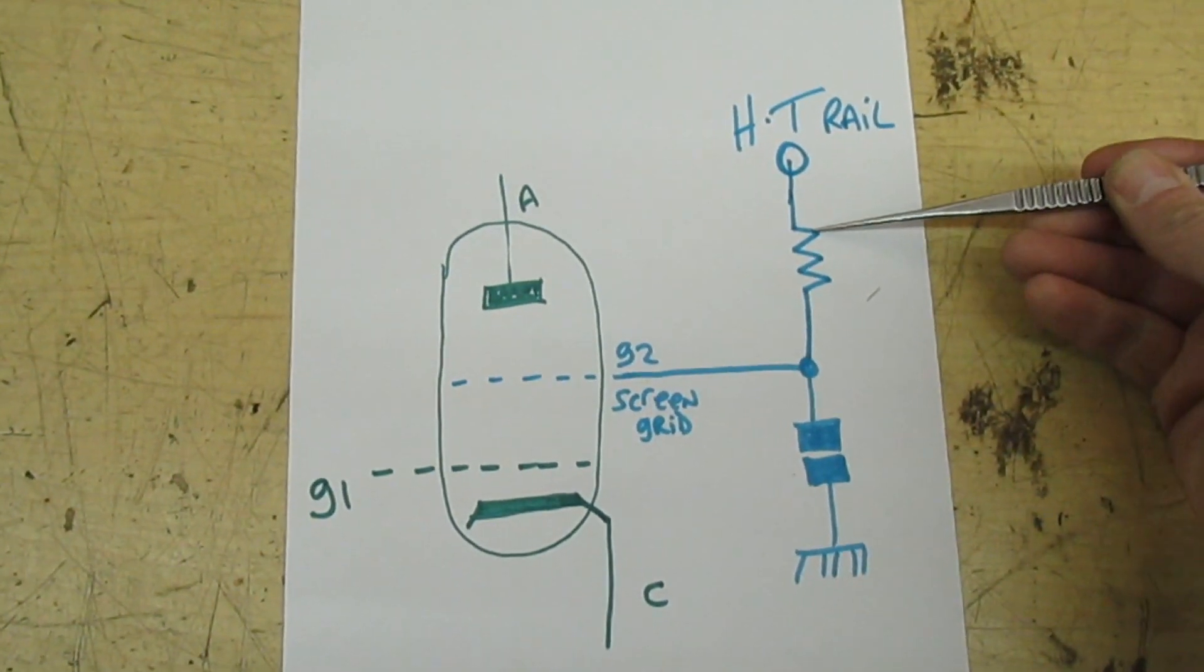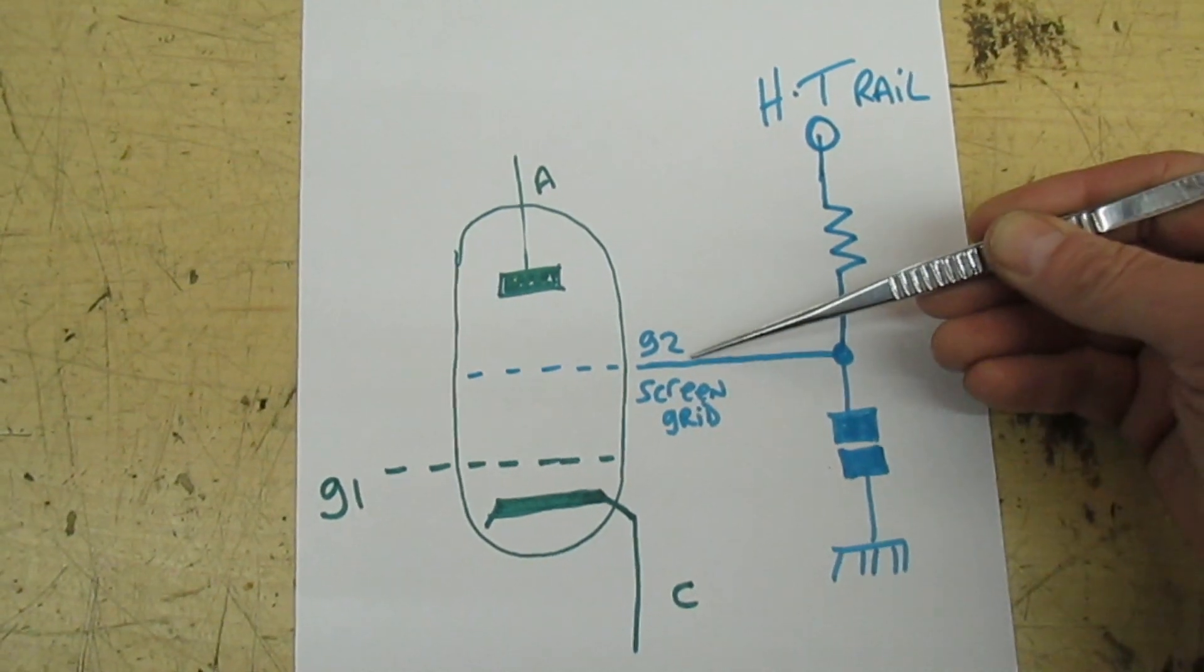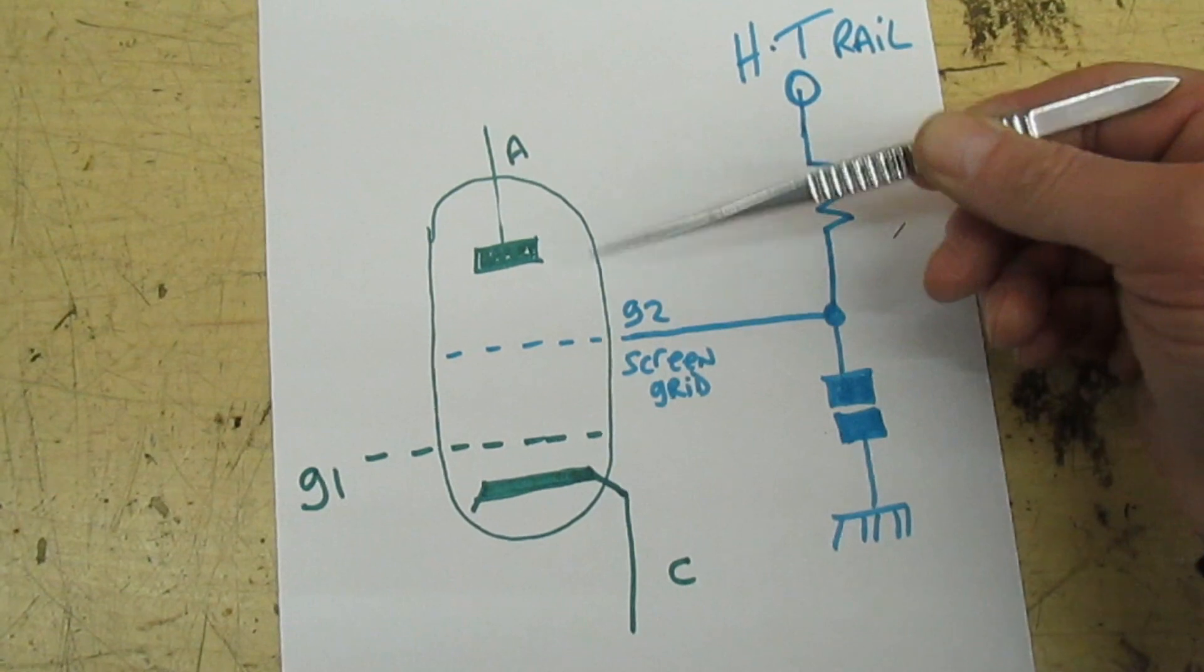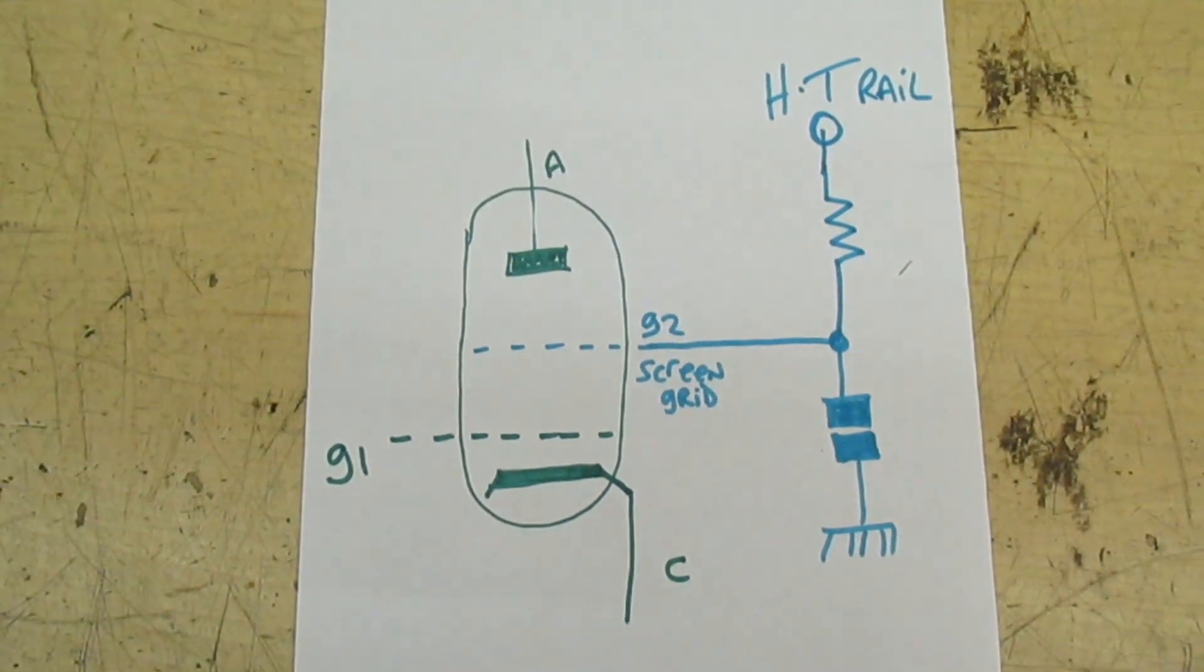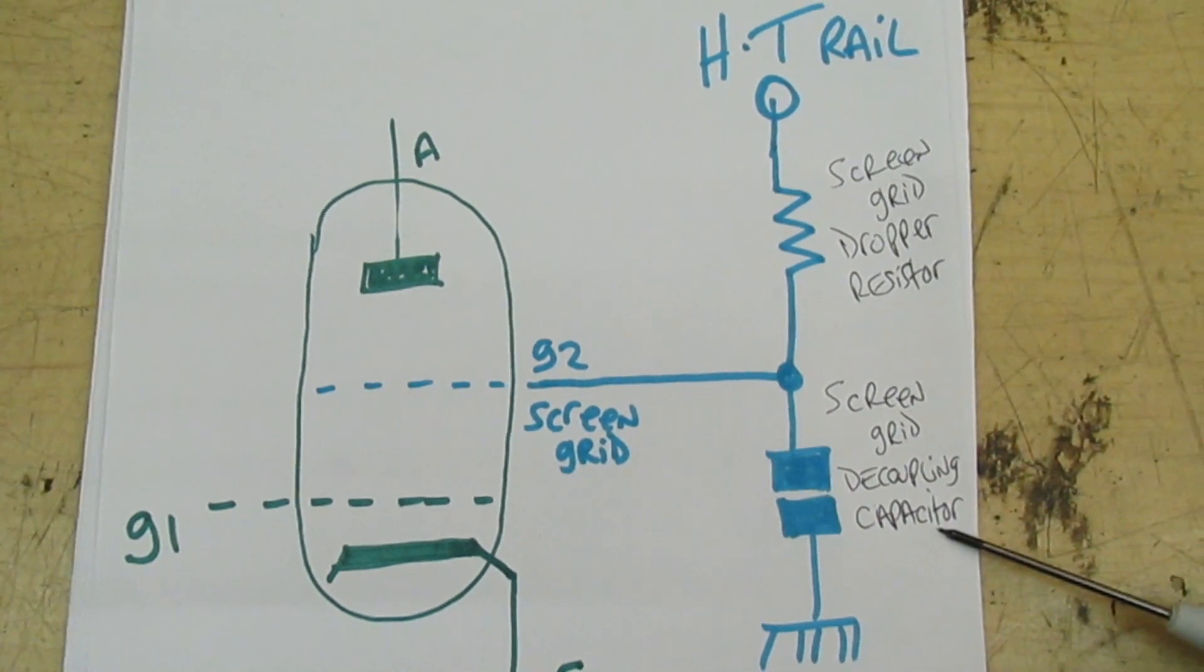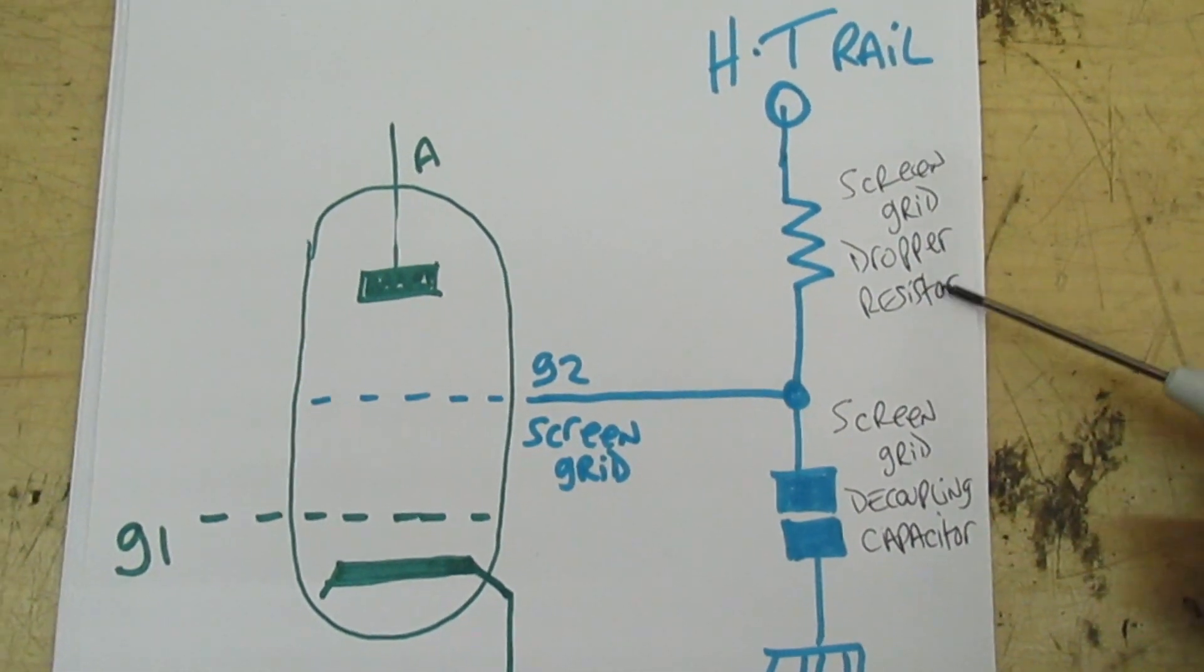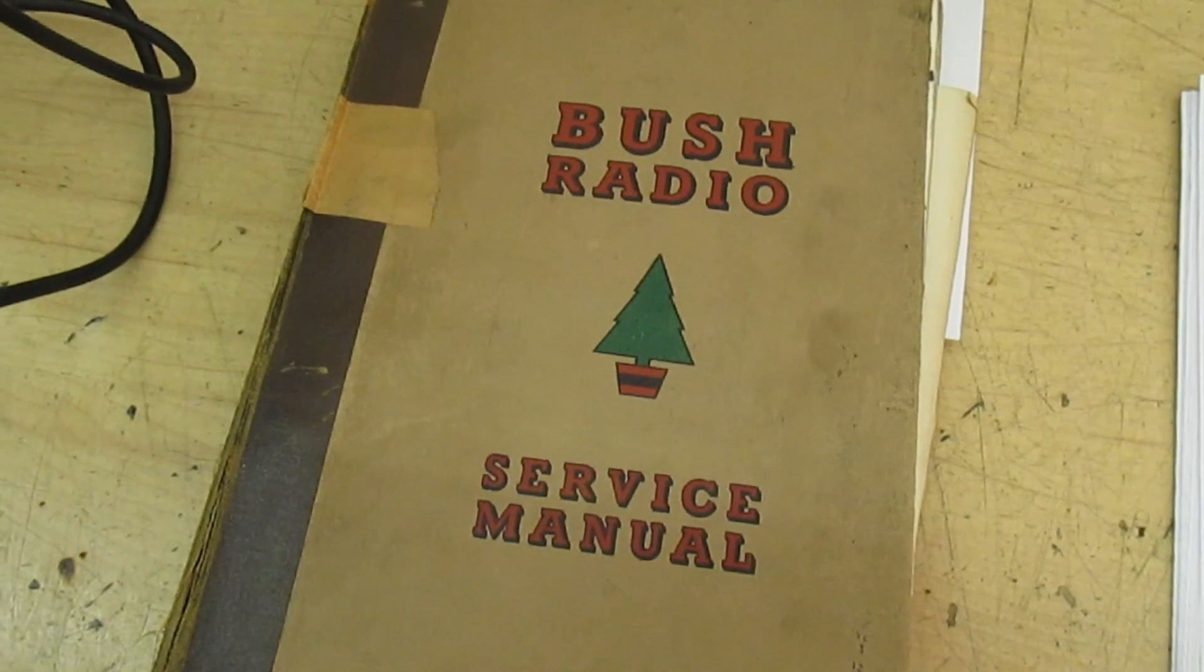That resistor actually makes the potential on the screen grid a little bit lower than that of the anode, so the electrons pass straight through without stopping. This capacitor we call the screen grid decoupling capacitor, and this resistor we call the screen grid dropper resistor. With the aid of a service manual for a valve radio, let's take a look at this in practice.